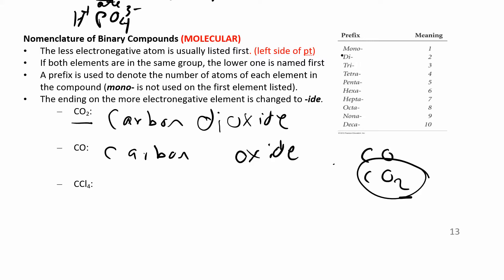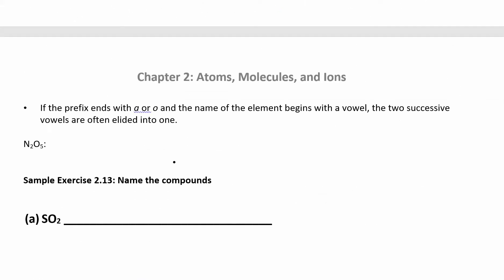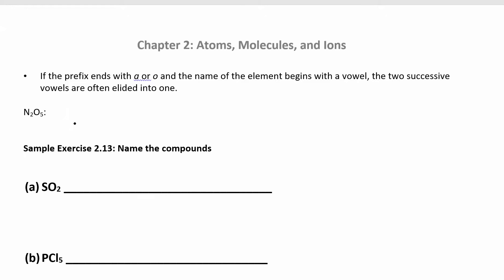Remember, don't ever start with mono. For carbon monoxide, we have carbon and one oxygen — we call it carbon monoxide, not monocarbon monoxide. For CCl4, I have carbon and four chlorides. Four is tetra, so that's carbon tetrachloride.